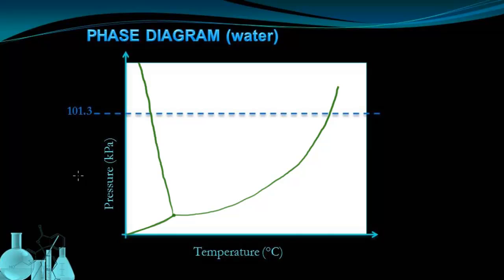A couple things to point out before we get started. First of all, we have pressure on one axis and temperature on the other axis. Secondly, we have a line that extends across the graph at 101.3 kPa, which represents the standard pressure.